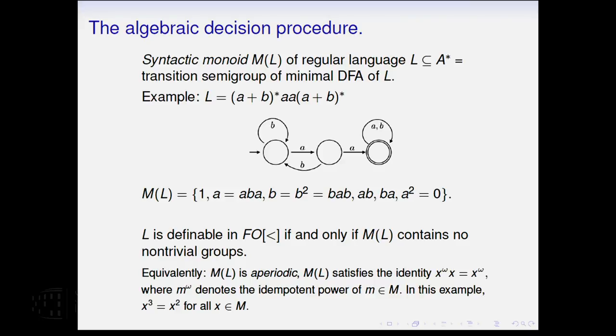And for the example that we saw before, the set of words that contain two consecutive A's, if you tabulate it, you'll find out that there are actually exactly six elements here. And these equations completely determine the multiplication of words in this monoid. And a language is definable in first-order logic if and only if this monoid contains no non-trivial groups. That's Schutzenberg's result.